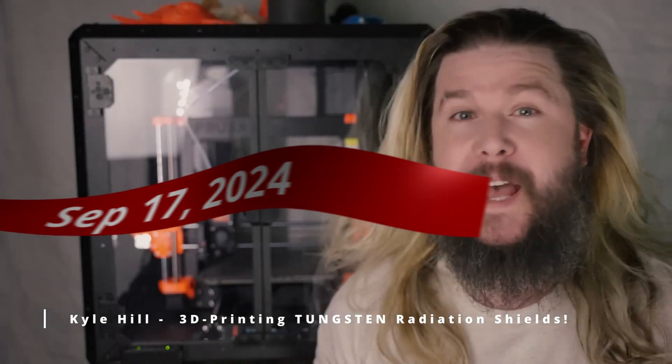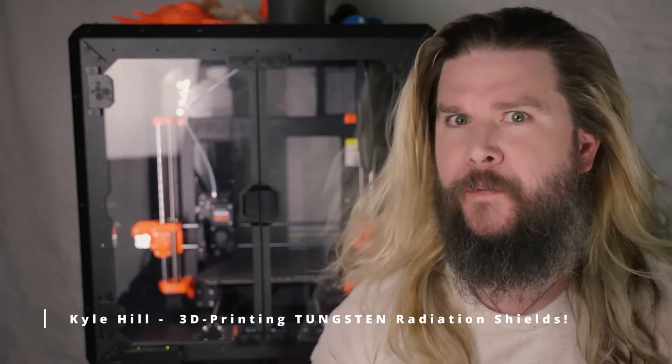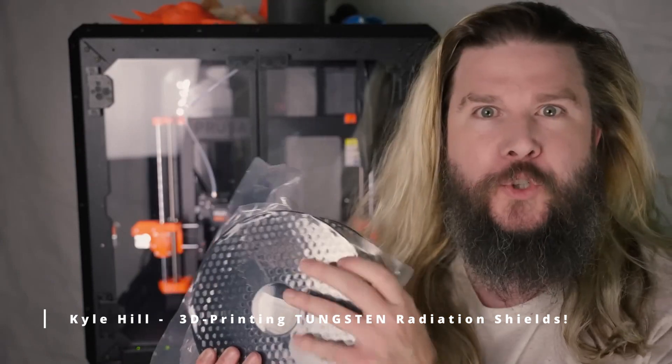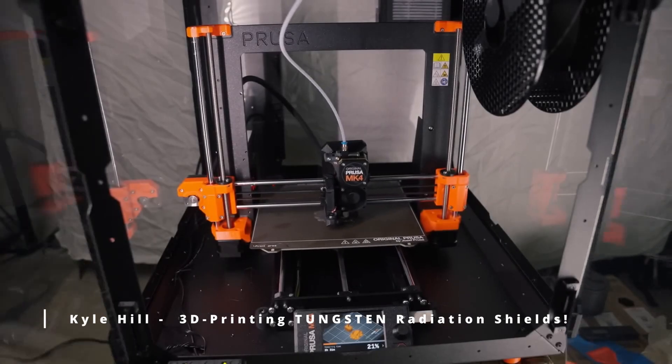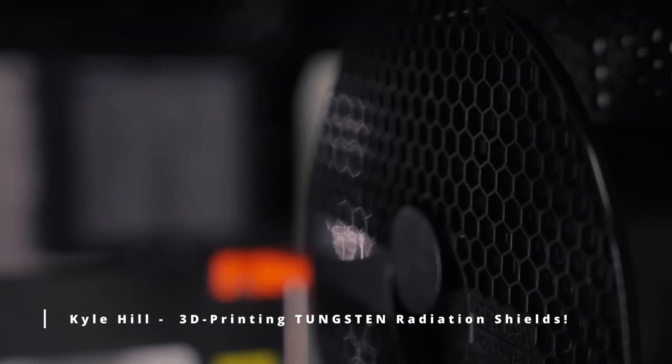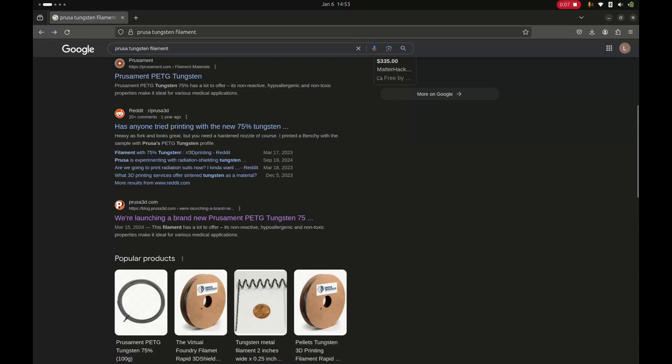Tungsten is one of the best radio protective materials that we have. That's where this 3D printer and this experimental new filament comes in. Prusa sent it to me because they have come up with a tungsten infused filament specifically for radiation shielding. Let's check this out.